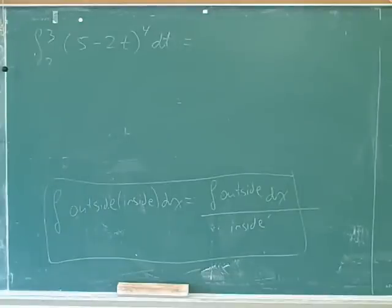What do you mean guys? One-fifth (5 minus 2t) to the fifth over negative 2. Yeah, you do. Whoo, okay we get it. Is that right?